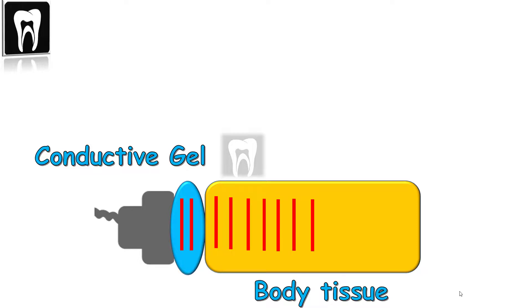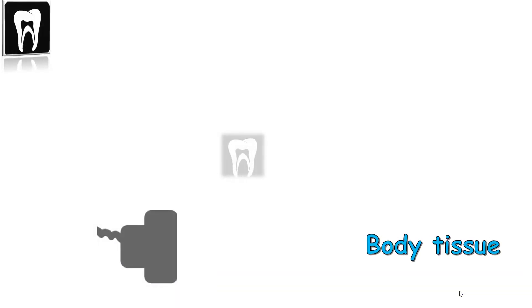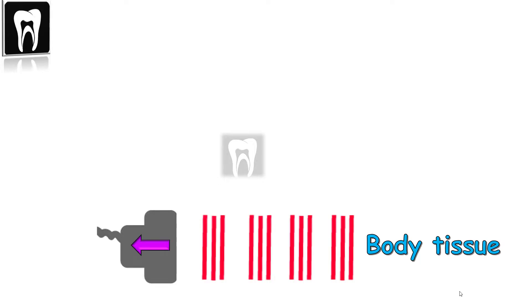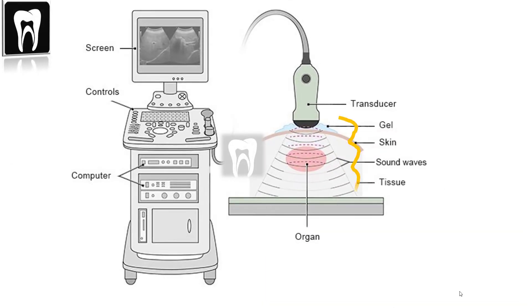The waves bounced off from the tissue is received by the piezoelectrical crystals. So, it receives the ultrasound waves reflected from the tissue, it gets compressed and produces electrical signals. The electrical signals is received by the computer and it builds up a black and white image on the monitor. An ultrasound picture is called a sonogram.